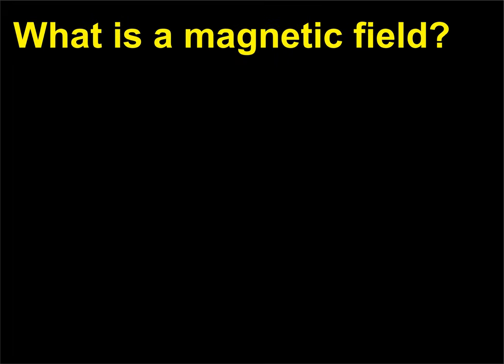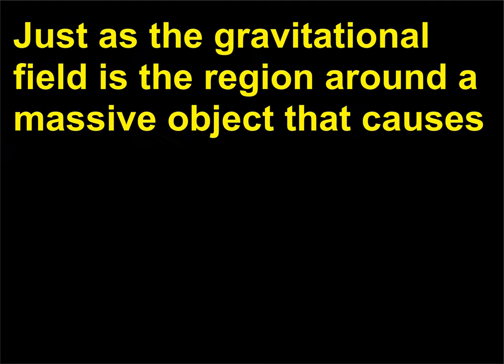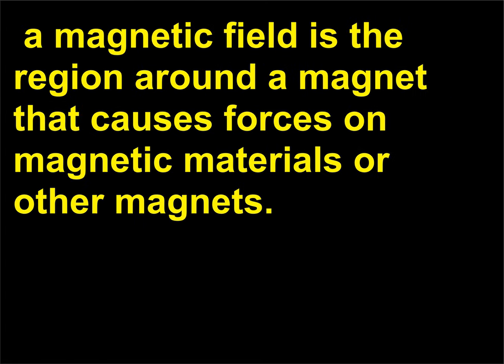What is a magnetic field? Just as the gravitational field is the region around a massive object that causes an attractive force on another object with mass, a magnetic field is the region around a magnet that causes forces on magnetic materials or other magnets.